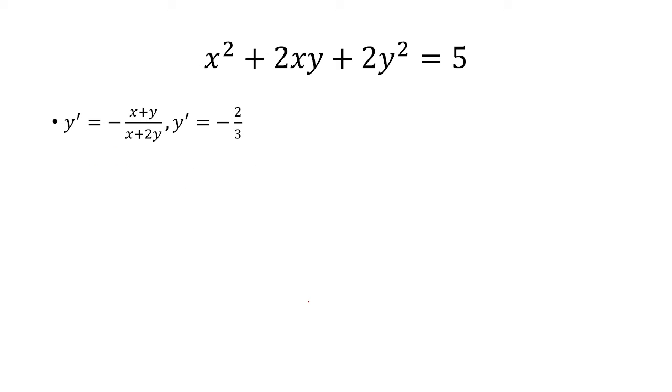Now we have to solve for the second derivative. So we want to take the derivative of the first derivative. And for that we're going to use the quotient rule. Take the derivative of the top. Well, derivative of x is 1. Derivative of y is y prime. Multiply that with the denominator.